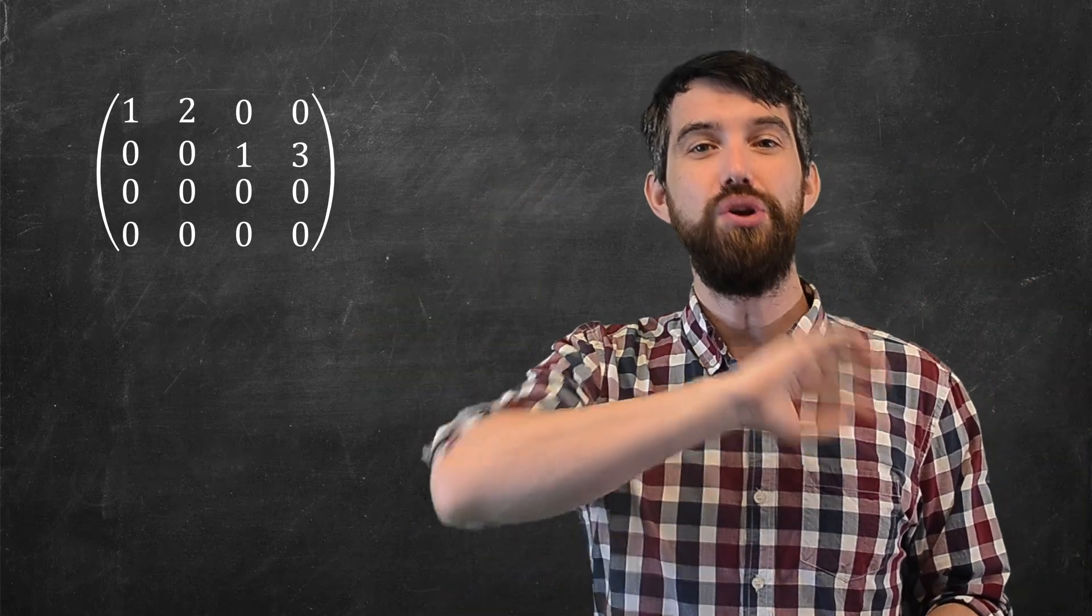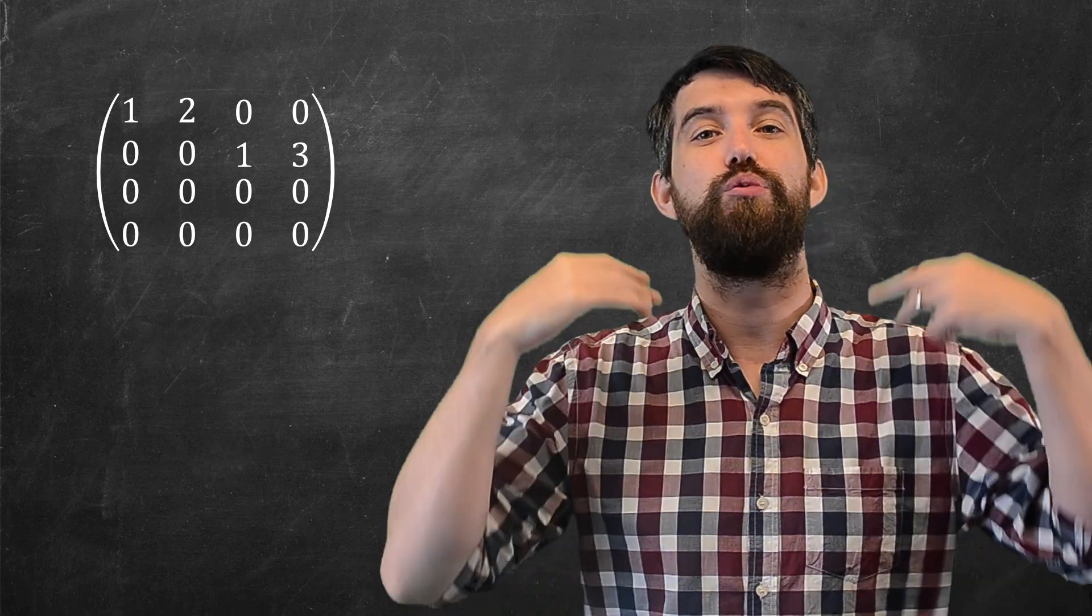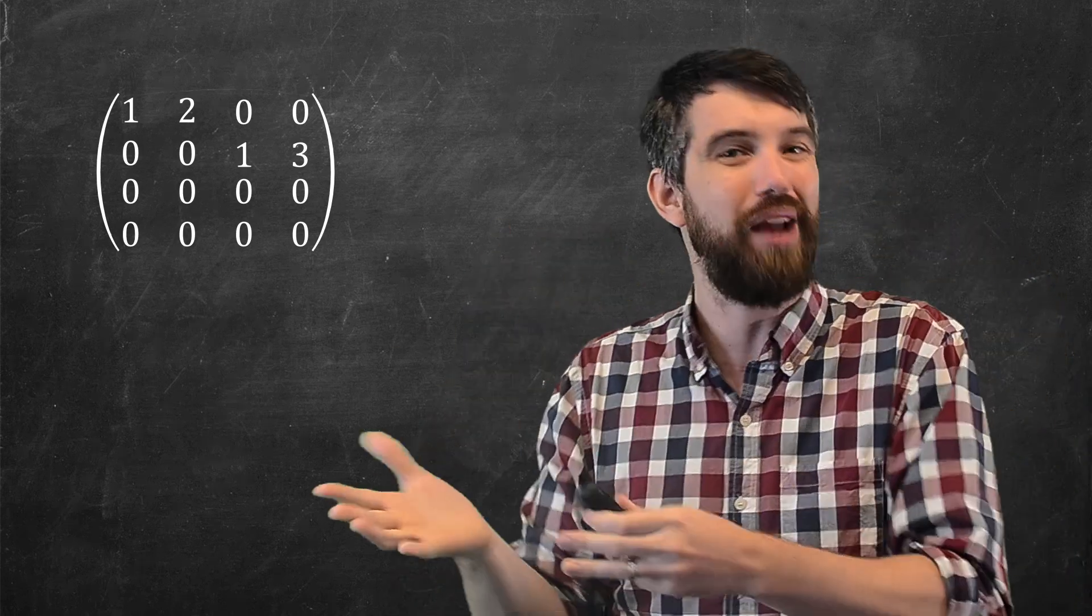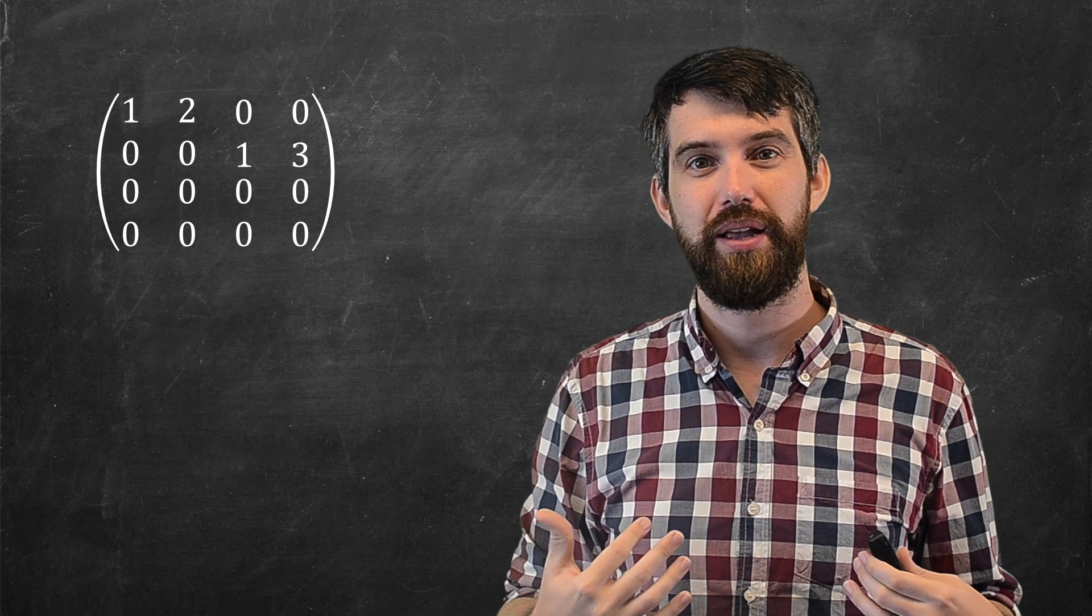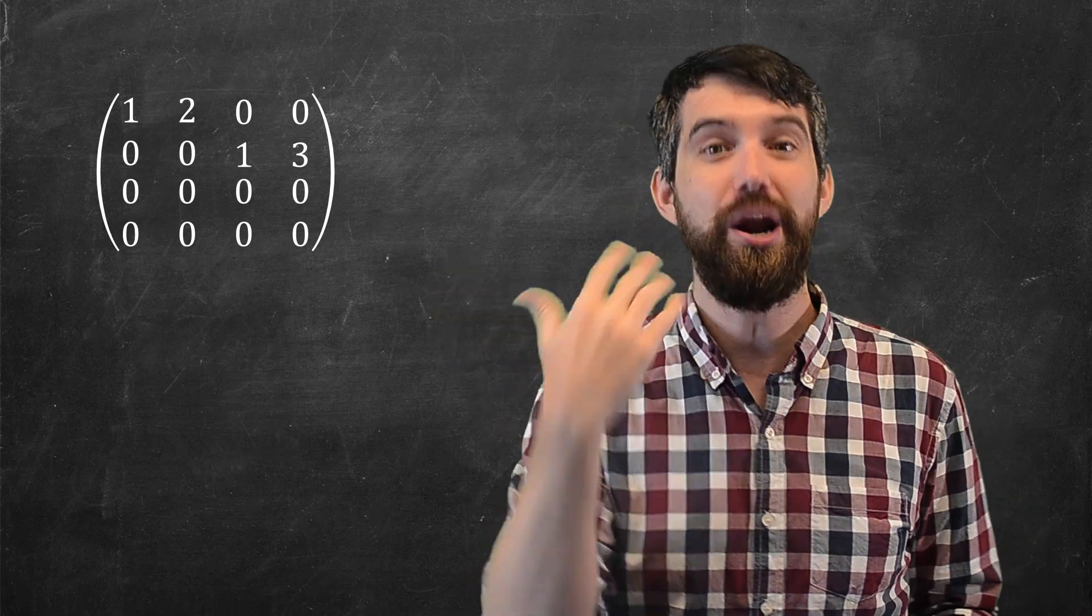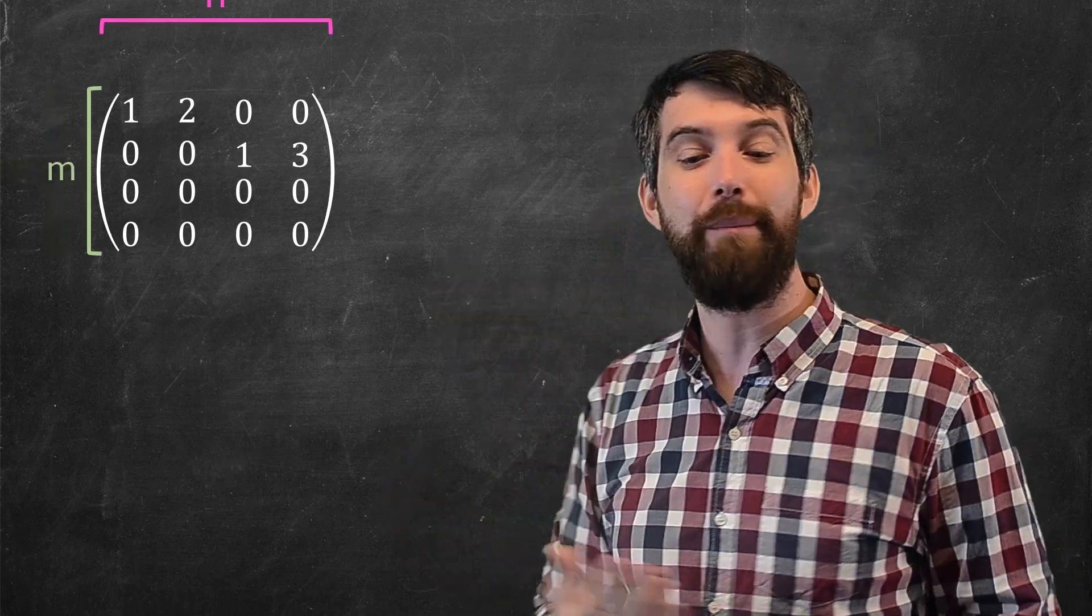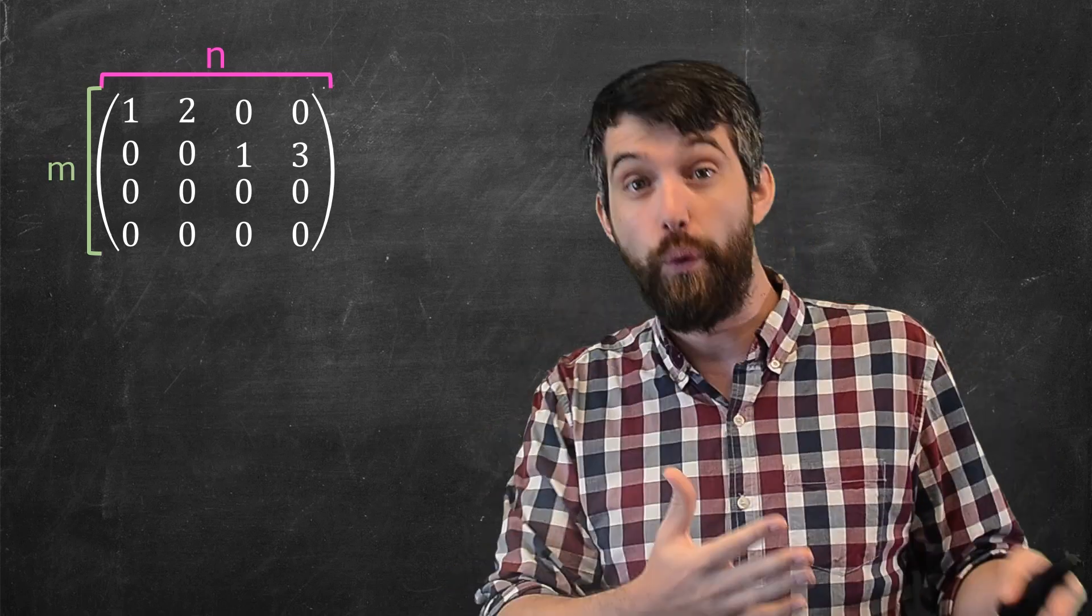And to do that, I'm going to introduce a new concept, a new name, called the rank of a matrix, which is just a bit of shorthand to make our lives a little bit easier. So, here's a matrix. Generically, our matrices are going to be m by n. In this case, it's 4 by 4.